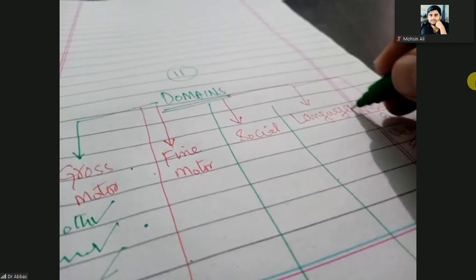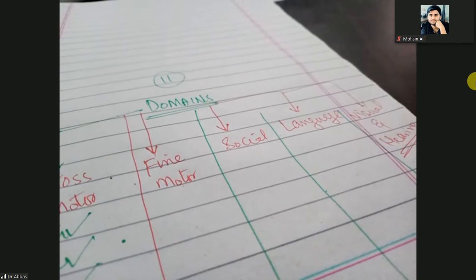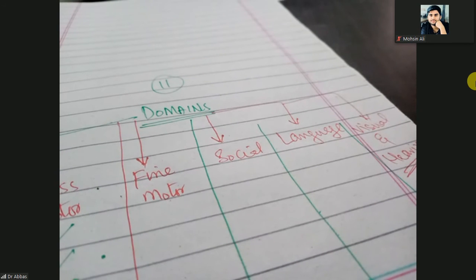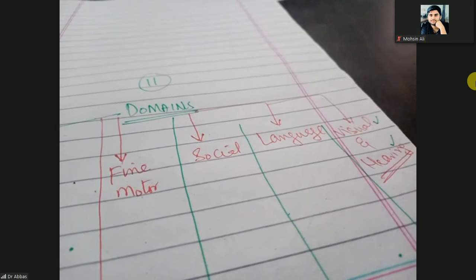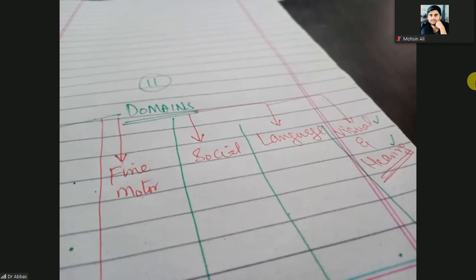Language development: how the baby is learning language. First the baby will learn very small words like mama and papa, then with increasing age the baby will learn other words. Visual and hearing domain: the baby can hear what you say — like instructions — and will visualize and respond accordingly. These are the five domains of development: gross motor, fine motor, social, language, and visual and hearing.